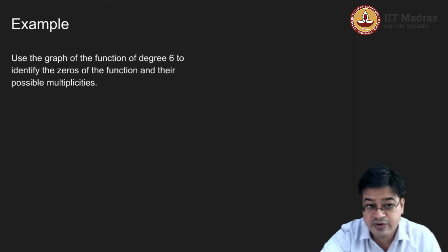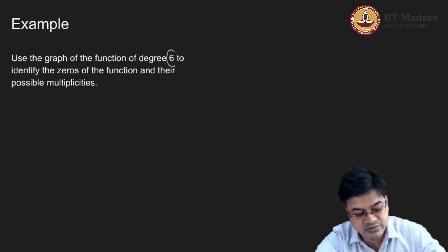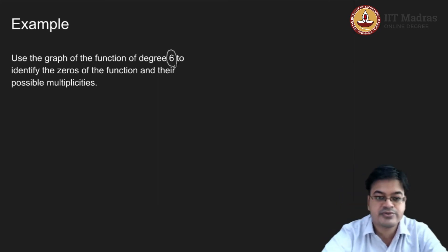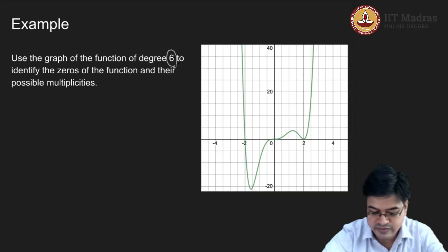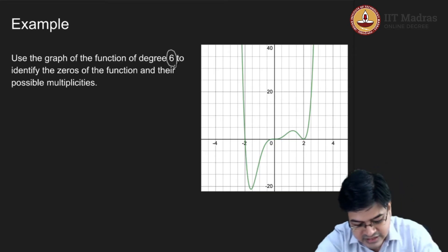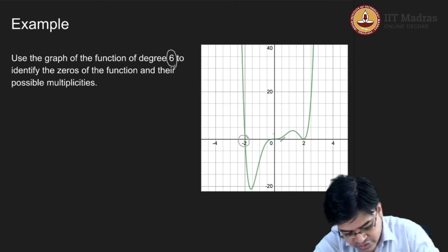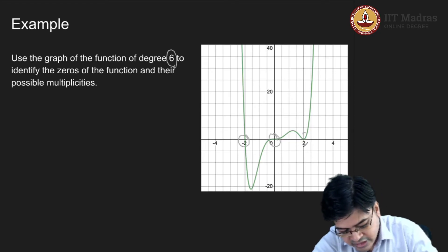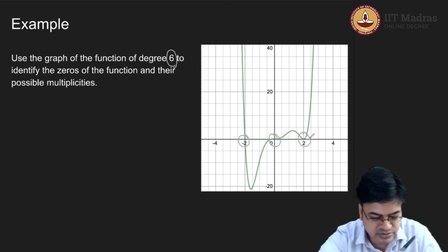Let us see an example. We have a polynomial of degree 6 — this is given to us along with its graph. You can easily see zeros at x equals minus 2, x equals 0, and x equals 2.